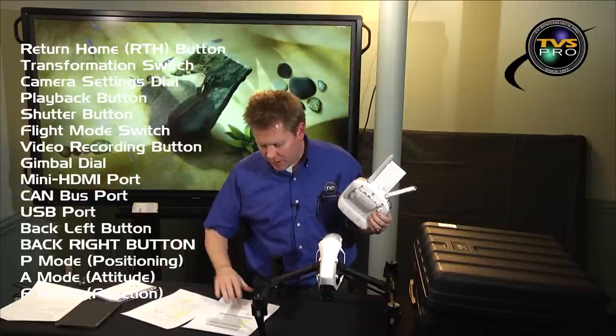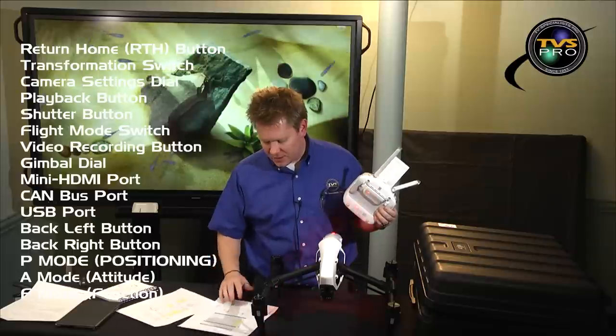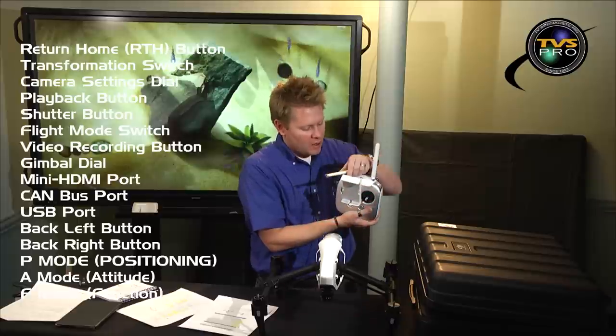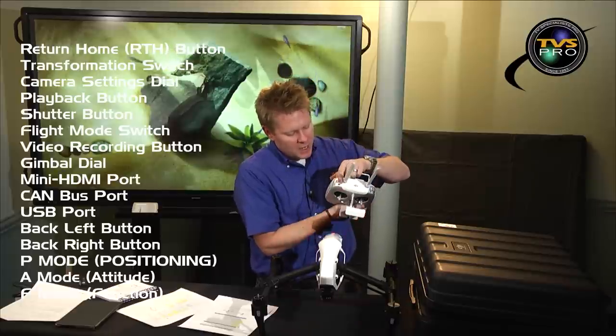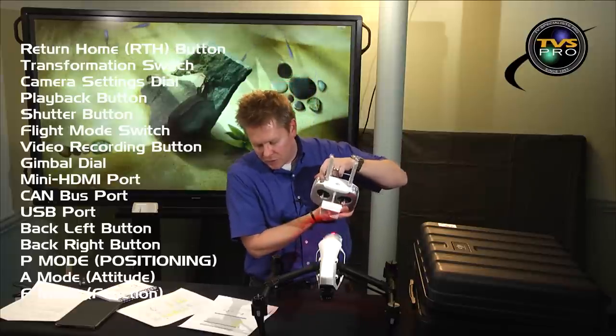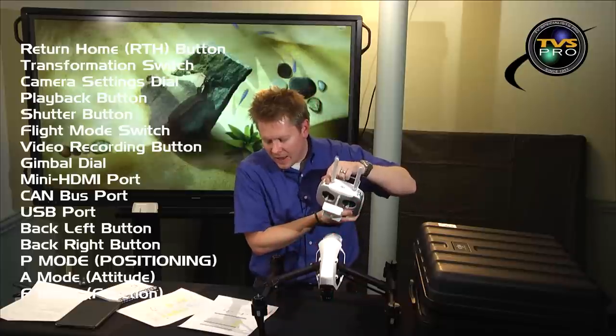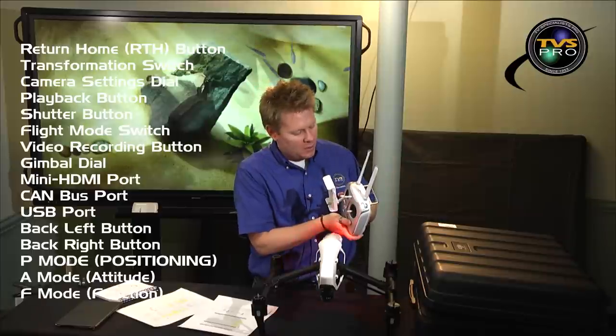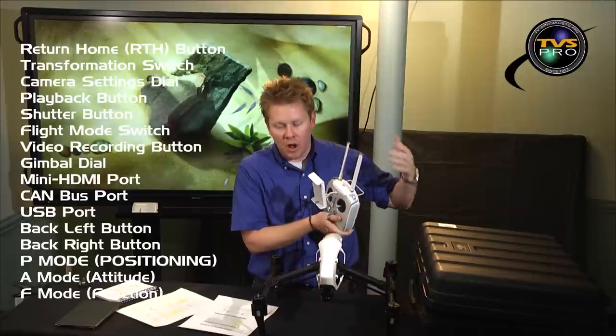I'm trying to think what other. I've got so many notes. I'm just excited to get out and fly this thing. The last thing I guess then on the remote is the flight mode button. You've got P, A, and F. These are position, attitude, and function. And so you can toggle between all of those.